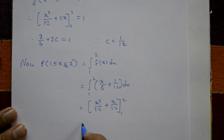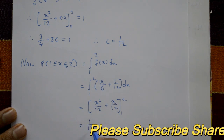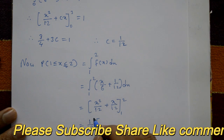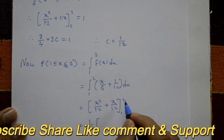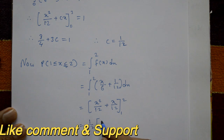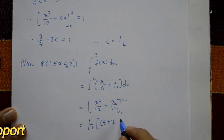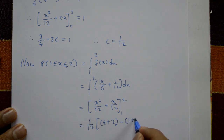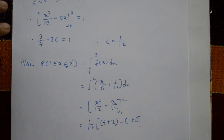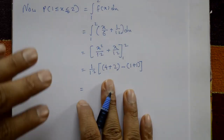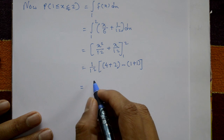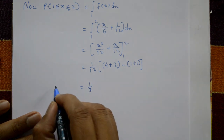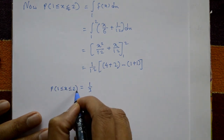Taking 1/12 outside: (1/12)(x² + x), evaluated from 1 to 2. Substituting x = 2: 4 + 2 = 6. Subtracting x = 1: 1 + 1 = 2. So (1/12)(6 − 2) = 4/12 = 1/3. Therefore P(1 ≤ x ≤ 2) = 1/3.